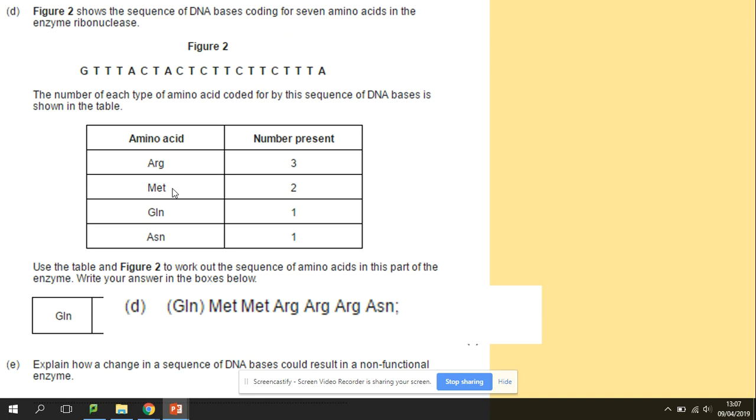Using the same approach, complete the rest of the table. So we've got met and met. We've finished on TAC here. We've got then TCT, TCT, and TCT. So we've got three the same repeats. So that's ARG. And the final TTA, which is only one. But we already know that GTT was used in the sequence. So that's nothing else. The ASN.